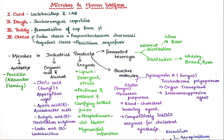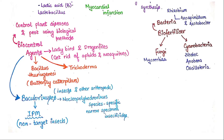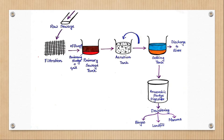Number 1: which microbes are used in household products. Number 2: in the industry, which microbes and products are used. Number 3: in agriculture, which microbes are used. And last, we have to see how the sewage treatment plant works.